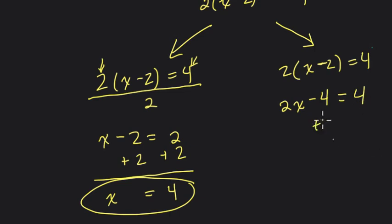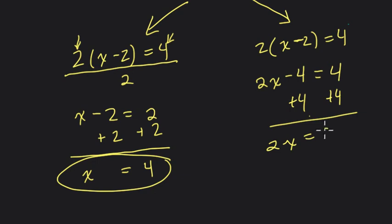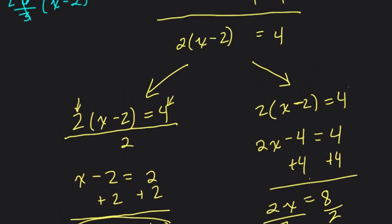equals 4. We add 4 to both sides, and now what happens? We have 2x equals 8, divided by 2 on both sides to solve for x, and x equals 4. And either way is obviously totally fine.